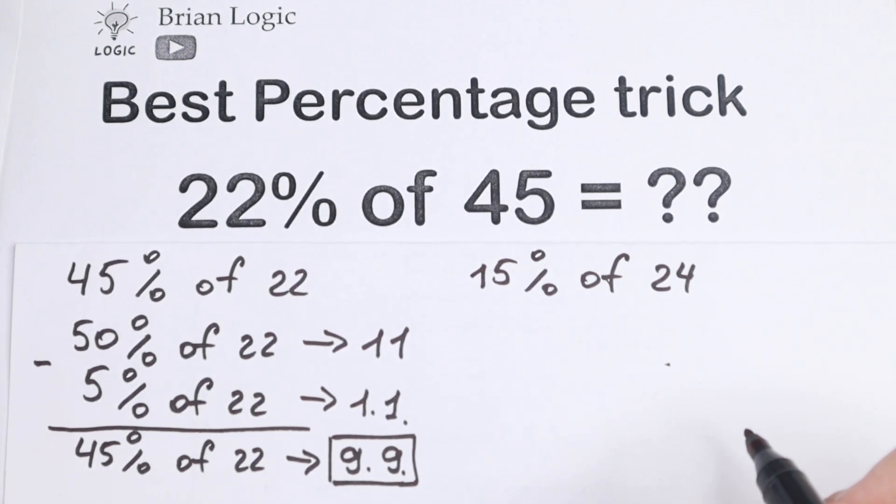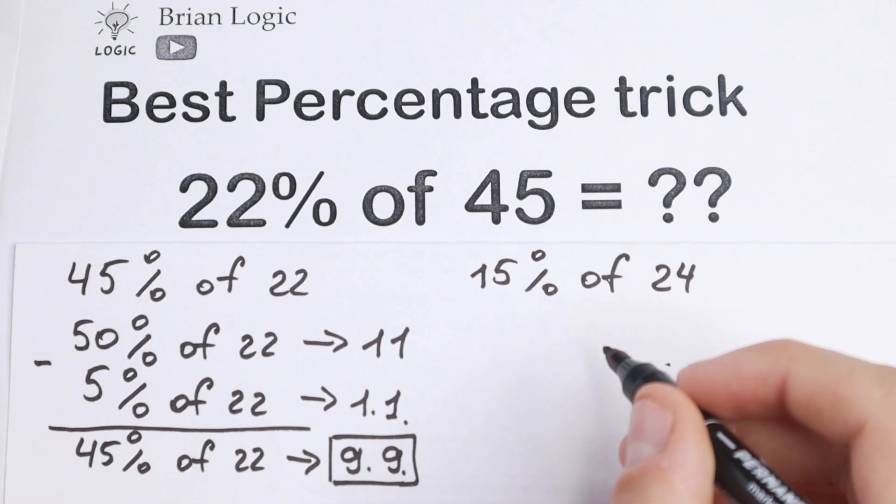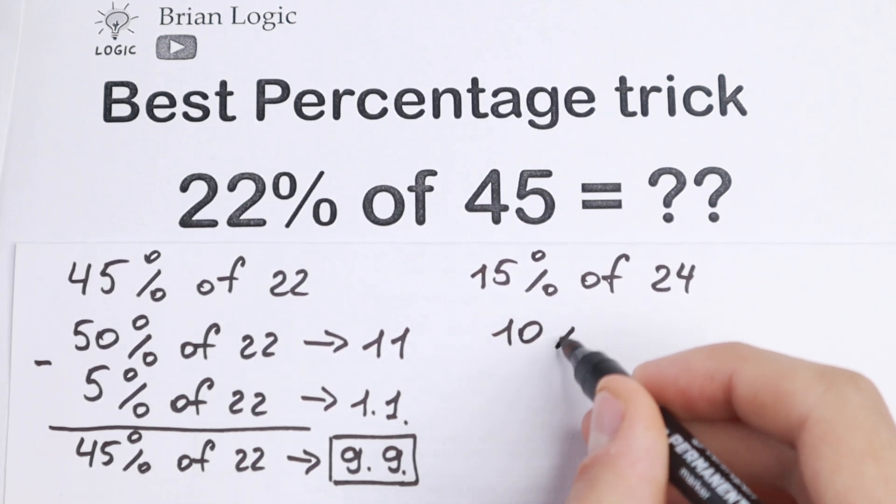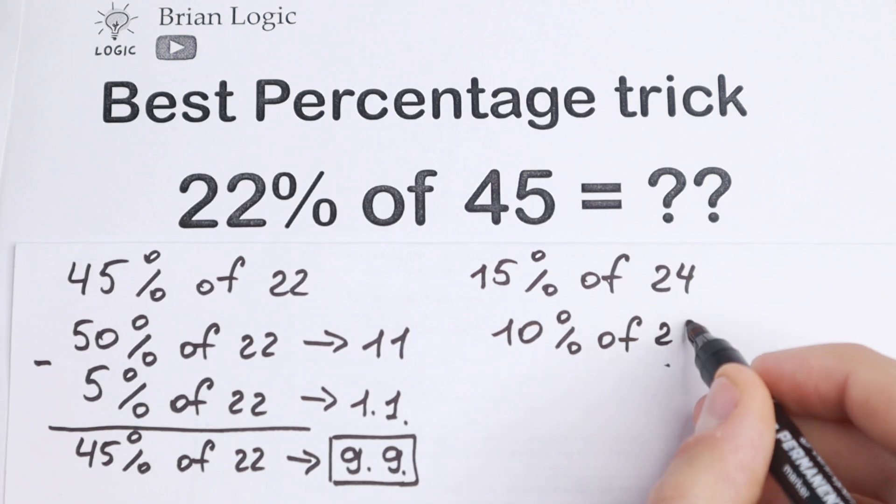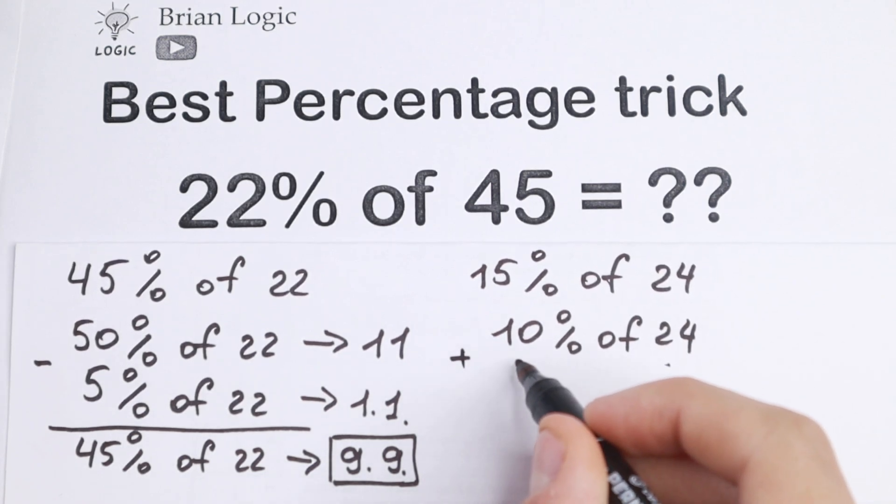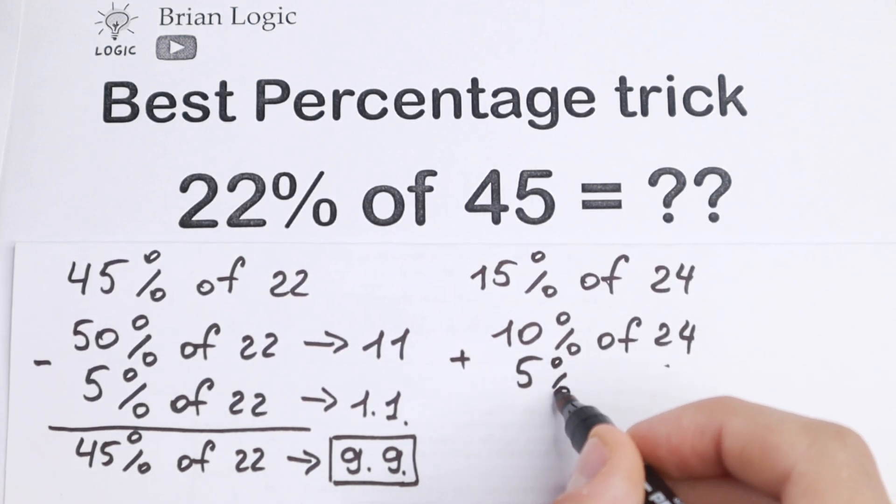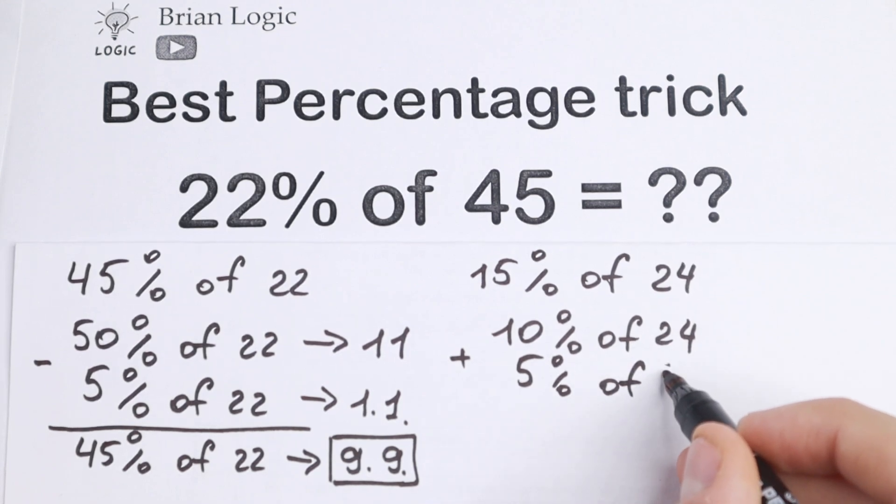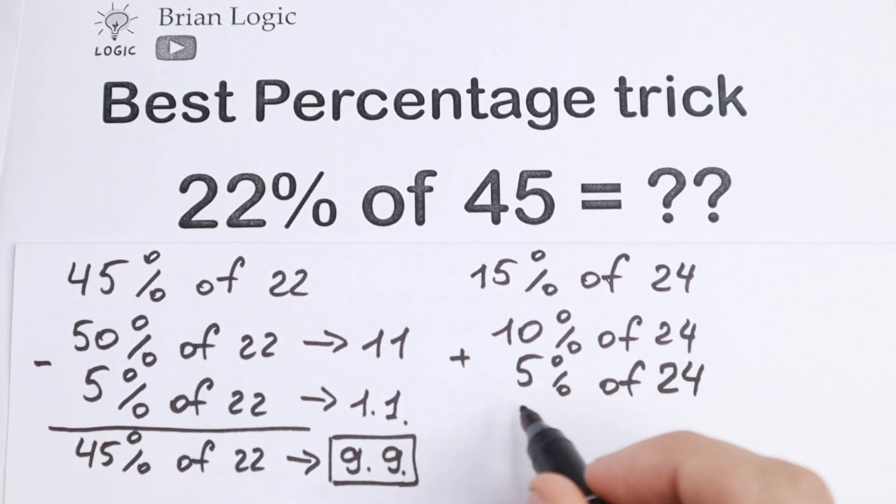15% is not good percentage, but we can find it as 10% of 24 and plus 5% of 24, for example. And we need to add it.